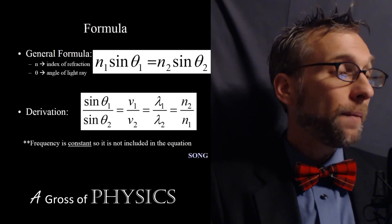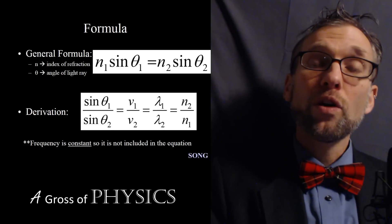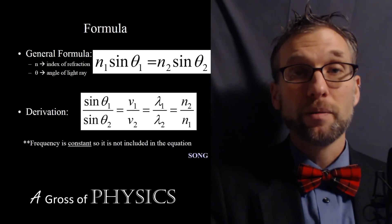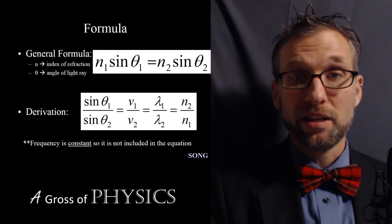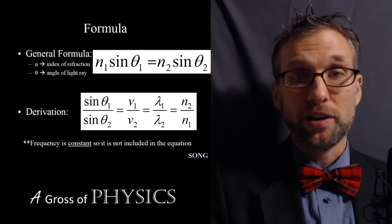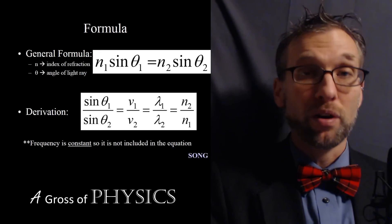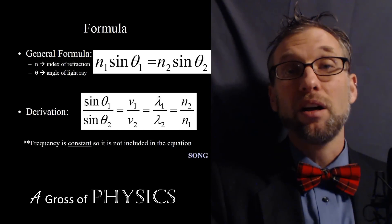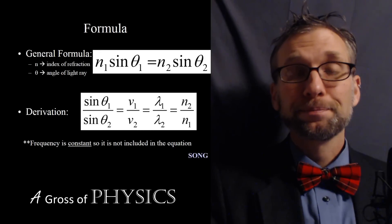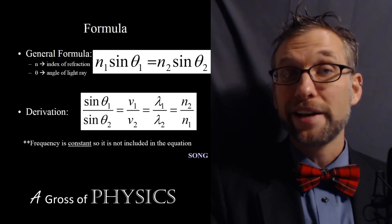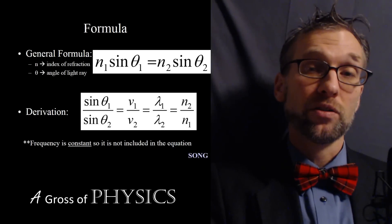Now onto the actual law. The formula is: N1 sine theta 1 equals N2 sine theta 2. N1 is the index of refraction of the first substance — sometimes air, sometimes water, wherever the light starts. Theta 1 is the angle of incidence — the angle at which it hits the boundary. N2 is the index of refraction of the second material, wherever the light is going into. Theta 2 is the angle of refraction.